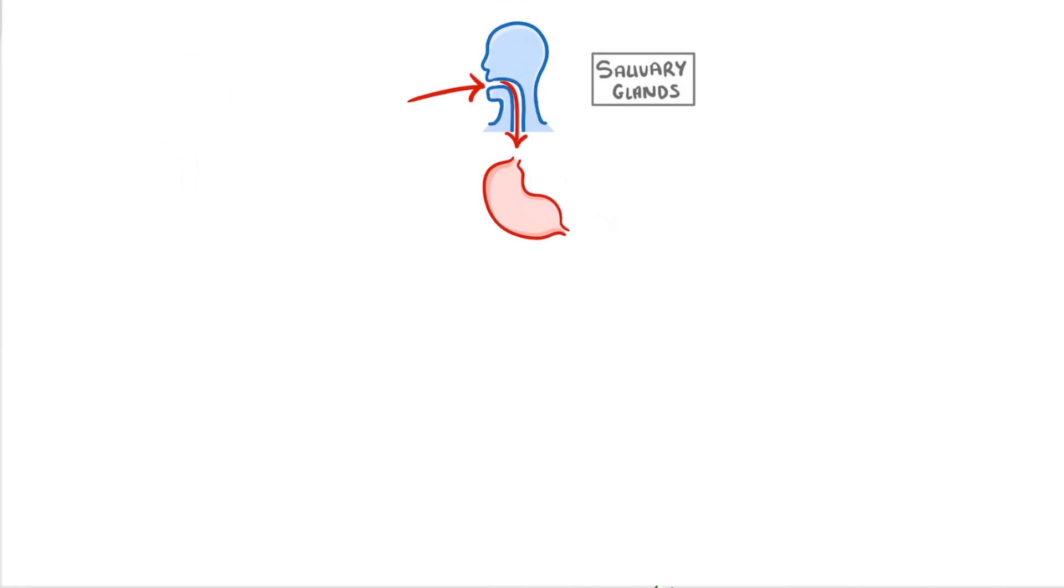Once the stomach has done its thing, it's pushed out into the small intestine, where it mixes with pancreatic juices from the pancreas and also bile that were stored in the gallbladder, but remember, made in the liver.